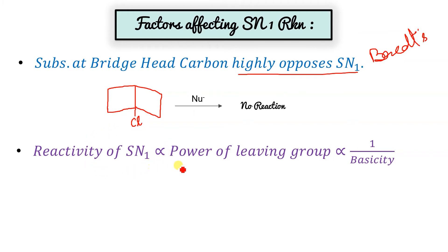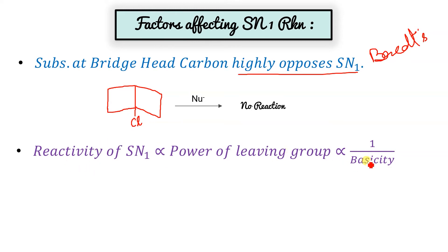Reactivity of SN1 is directly proportional to the power of the leaving group — the more easily the leaving group moves out, the faster the SN1 reaction. This correlates with basicity: the more easily a group leaves, the lower its basicity (less basic character).